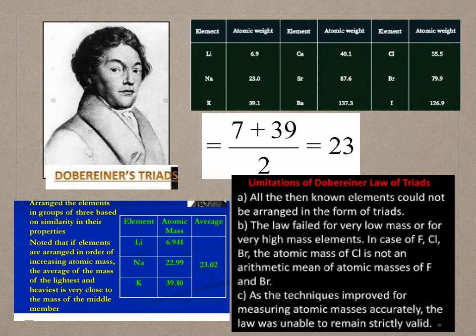In the case of fluorine, chlorine, and bromine, the atomic mass of chlorine is not an arithmetic mean of the atomic masses of fluorine and bromine. Additionally, as techniques improved for measuring atomic masses accurately, the law was unable to remain strictly valid.